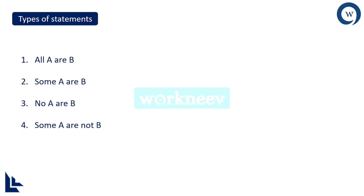Four types of statements possible are: All A are B, Some A are B, No A are B, and Some A are not B. Now let us see how to write the Venn diagram for these statements, because you should know the meaning of these statements. Let us go one by one.